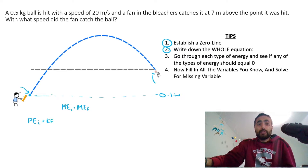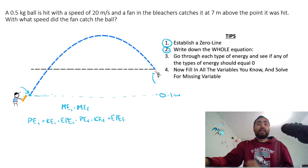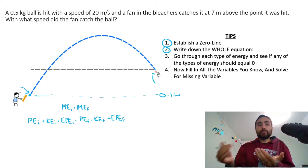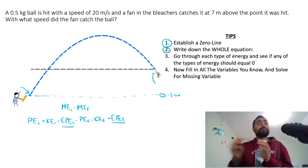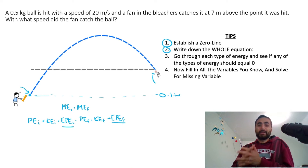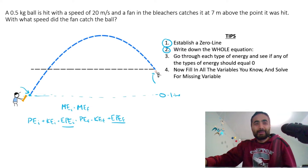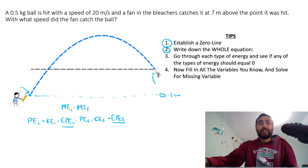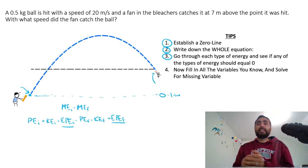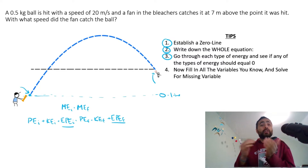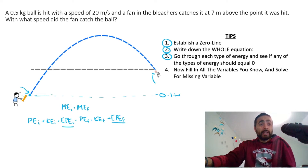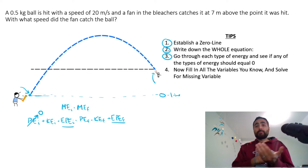Write down the whole equation: potential energy initial plus kinetic energy initial plus elastic potential energy initial equals potential energy final plus kinetic energy final plus elastic potential energy final. You might be thinking, why write the elastic potential energy terms — there's no springs here. But like I said, I've seen so many students make mistakes; just write it all down, it takes two more seconds but can save you lots of points. Now go through each type of energy. At the very beginning, is it at the zero line? Yes, so potential energy initial is zero.